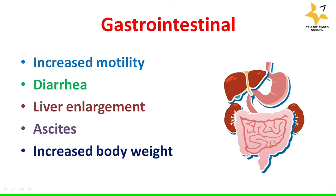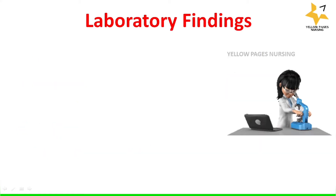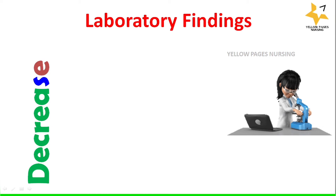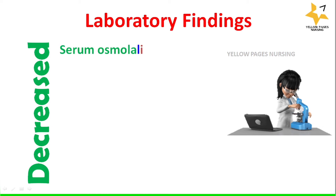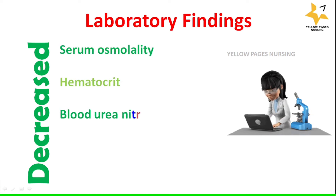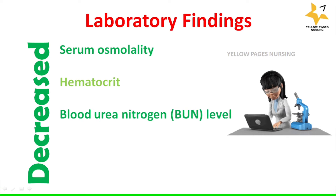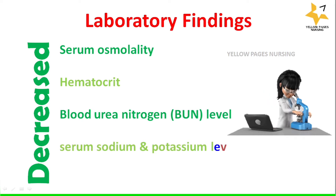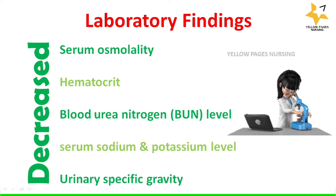Laboratory findings of hypervolemia reveal decreasing serum osmolality, hematocrit, blood urea nitrogen level, serum sodium, and urine specific gravity.